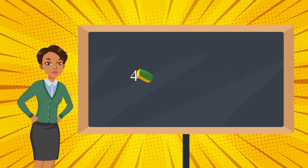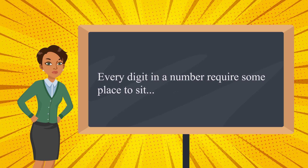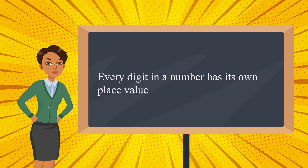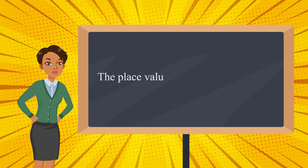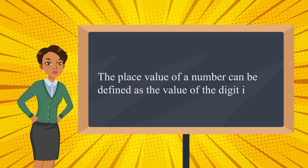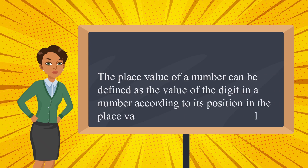We have seen that every digit in a number requires some place to sit. It means that every digit in a number has its own place value. The place value of a number can be defined as the value of the digit in a number according to its position in the place value chart.